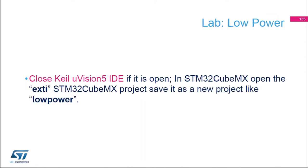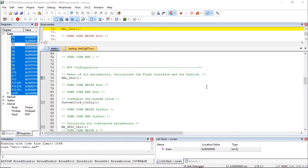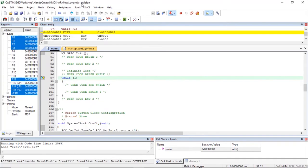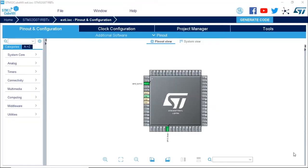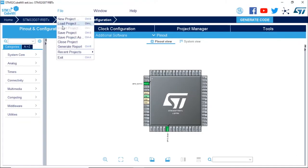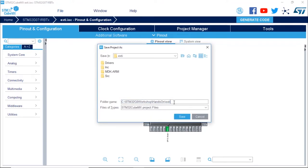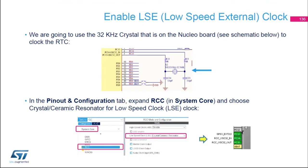Now it's time for the low-power lab. First, we're going to close Keil µVision 5, and from STM32 CubeMX we're going to open the EXTI project that we previously created and rename it as low-power. The first step will be to enable the LSE, which is the low-speed external clock. On the Nucleo board, you have a 32 kHz crystal connected to PC14 and PC15, which we're going to use to clock the RTC.